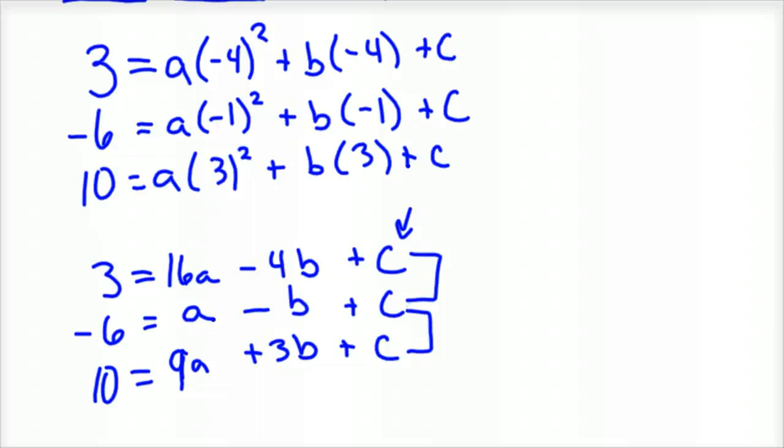So I'm going to eliminate the c on the first two equations and the bottom two equations. So what you do is I'm going to rewrite the top equation, 3 equals 16a minus 4b plus c. This is negative six equals a minus b plus c. And in order to eliminate the c's off of those two equations, I'm going to have to have, I want to add down, and the c's have to eliminate. Well, right now you'd have 2c if you added down. We don't want that. We want zero.